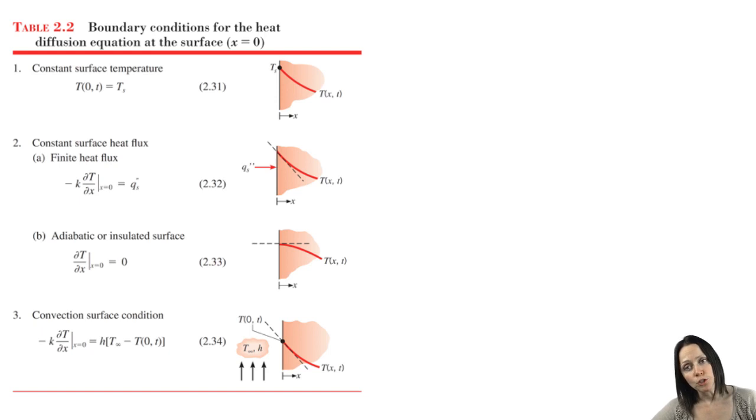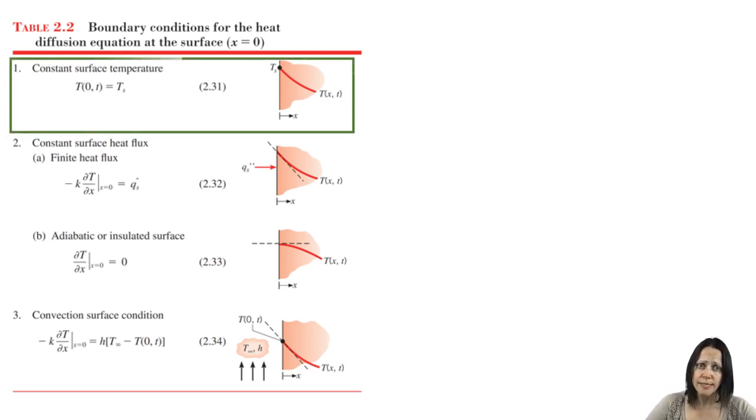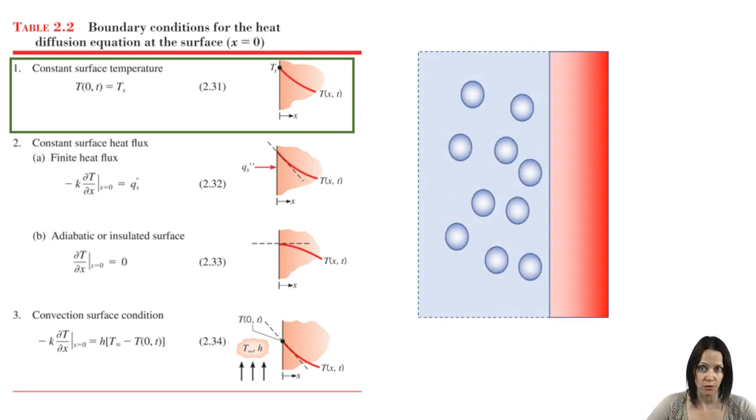Table 2.2 in your book lists some common boundary conditions. Let's look at the first one. This one is where you have a constant temperature at the surface. Where might you see this in practice? Let's say that you have a hot wall, shown in red on the right,